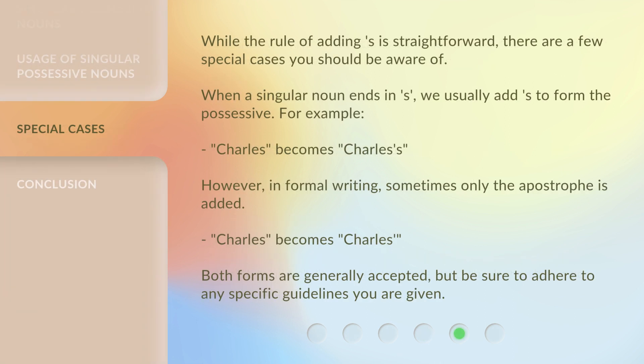While the rule of adding 's is straightforward, there are a few special cases you should be aware of. When a singular noun ends in S, we usually add 's to form the possessive. For example, Charles becomes Charles's. However, in formal writing, sometimes only the apostrophe is added: Charles becomes Charles'. Both forms are generally accepted, but be sure to adhere to any specific guidelines you are given.